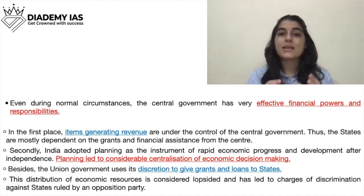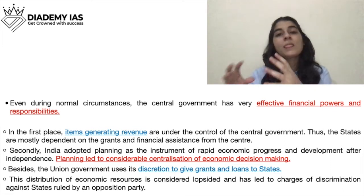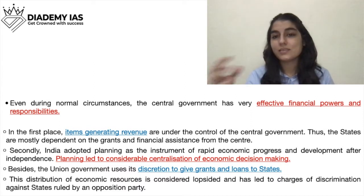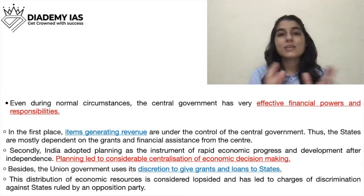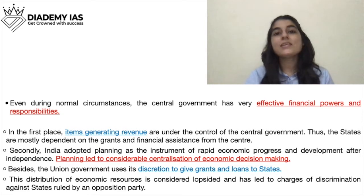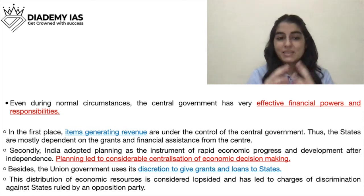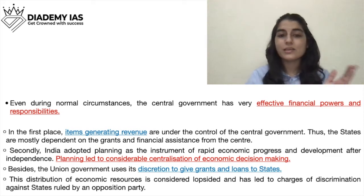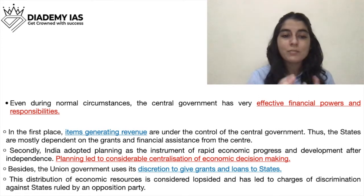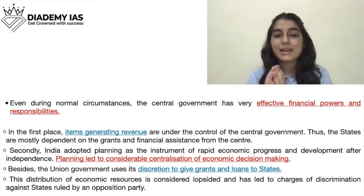The third provision is that even during normal circumstances, the central government has very effective financial powers and responsibilities. States are financially dependent on the central government for financial resources and grants. As seen during COVID times, states were asking the central government for help because businesses were affected by lockdown and states could not generate enough revenue. It is the central government's discretion to give grants and loans to the states.